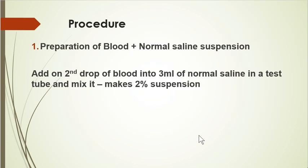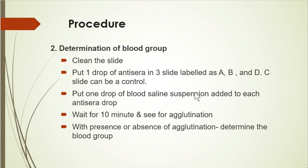The procedure has two steps. First is preparation of the blood and normal saline suspension. After pricking the finger, wipe the first drop of blood and use the second drop. Take 3 ml of normal saline in a test tube and add one drop of blood into it, or touch the finger to the test tube and invert to mix. This gives a 2% suspension.